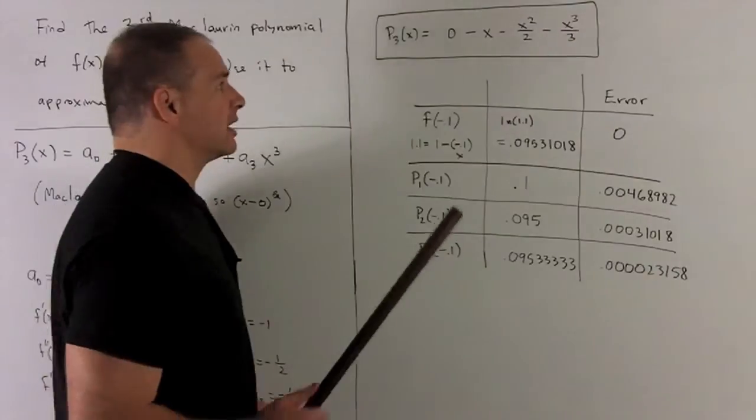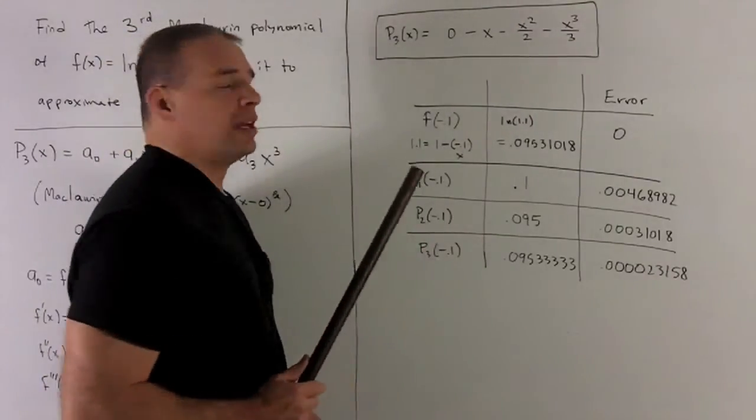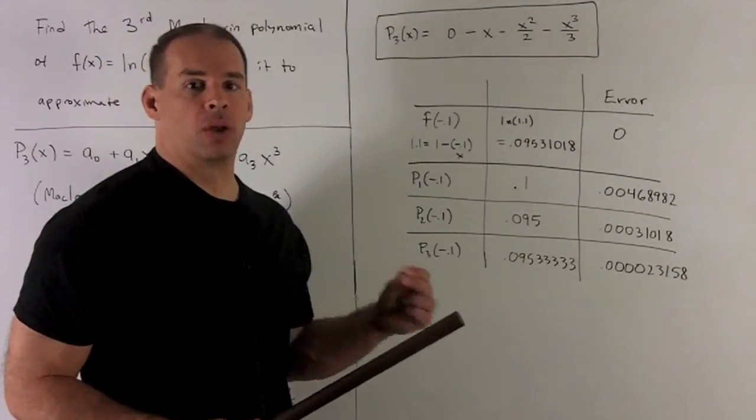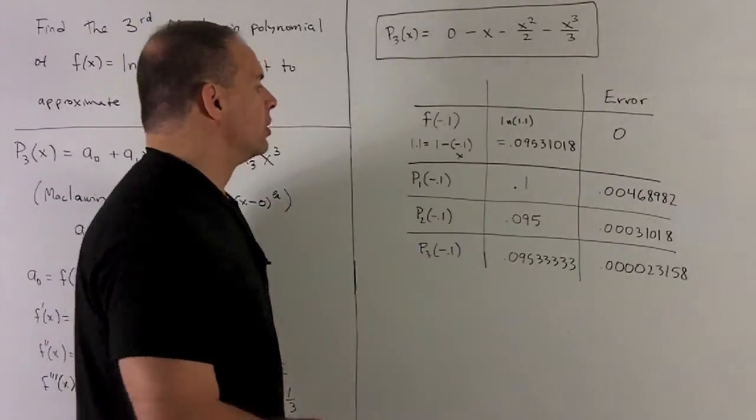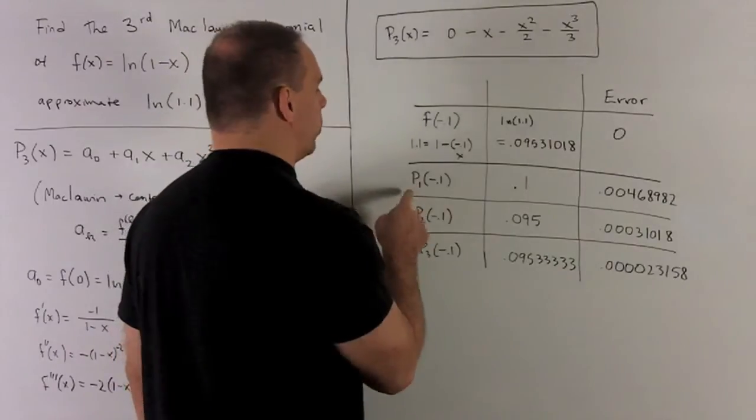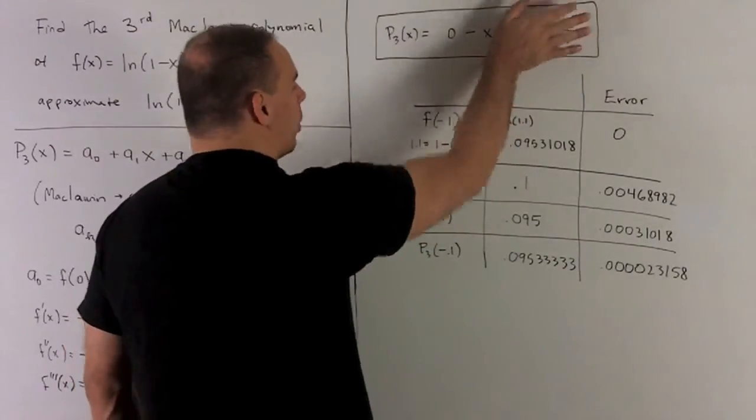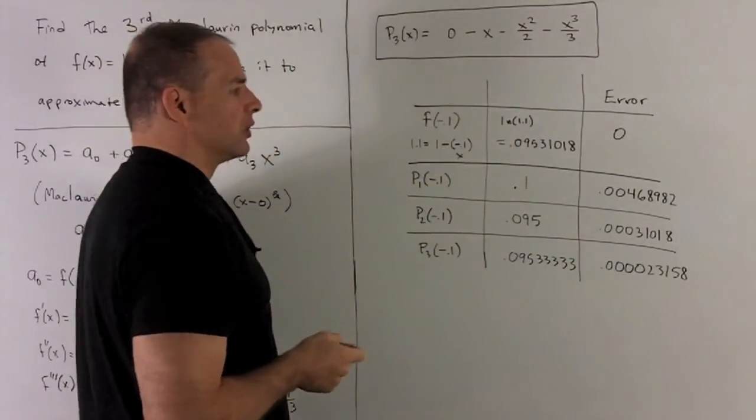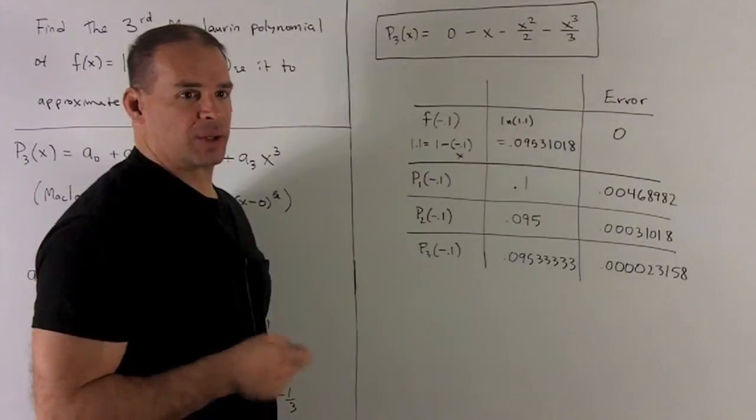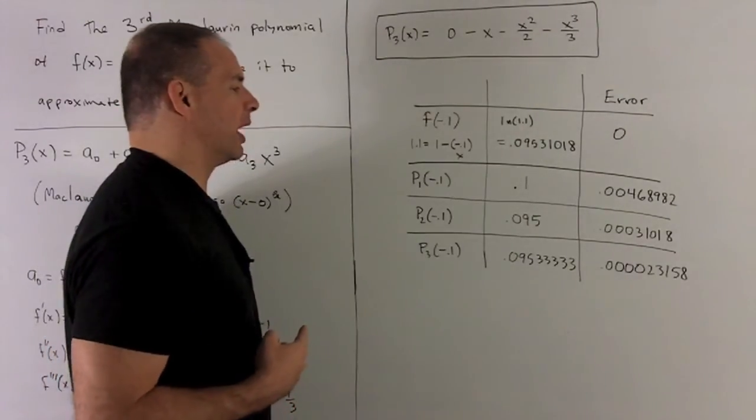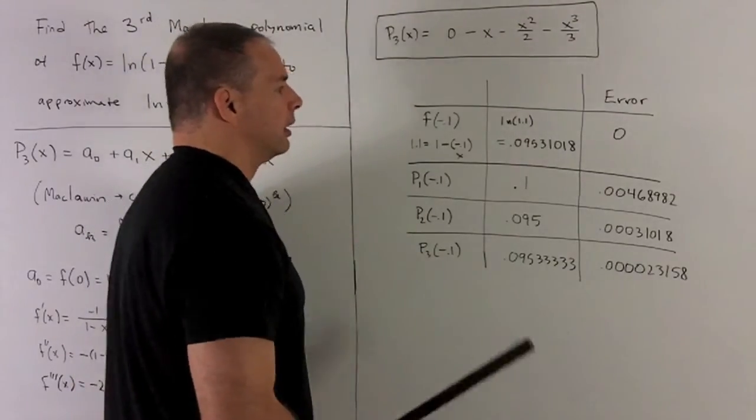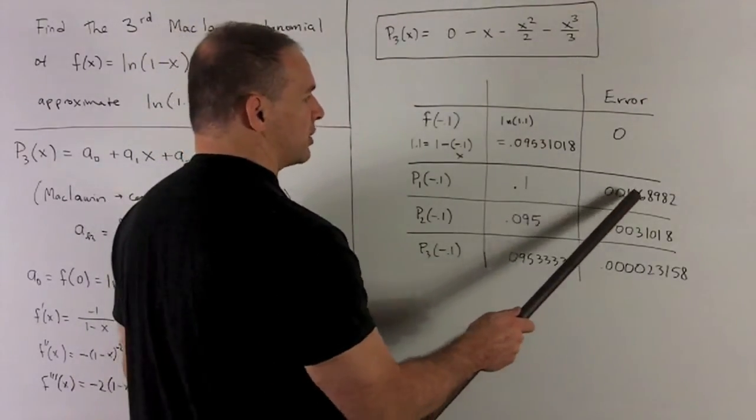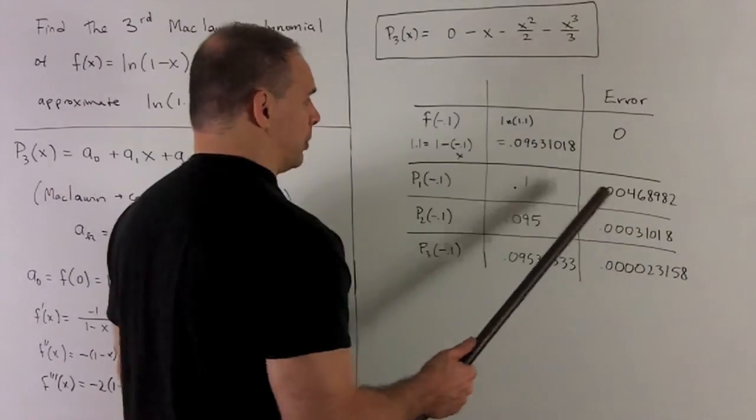So we want to take this out one term at a time, just to see how we get closer and closer as we add on more terms of the Maclaurin polynomial. So if I just put minus 0.1 into P_1, note P_1 is just our tangent line, so that's what we would have done if we didn't have this polynomial business. That's just going to give me 0.1, and our error here gets us to the thousandth decimal place.